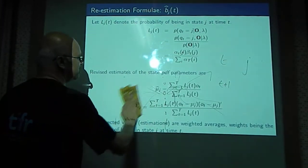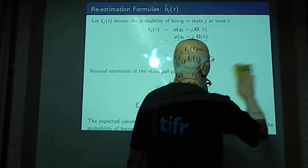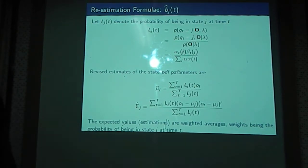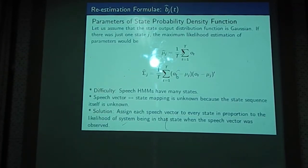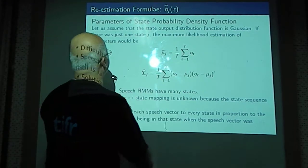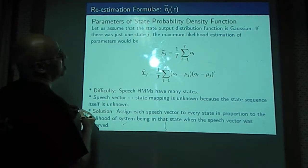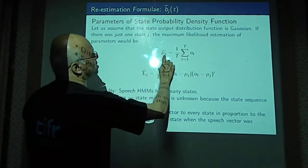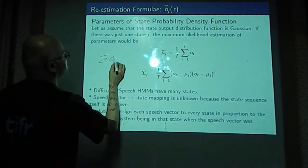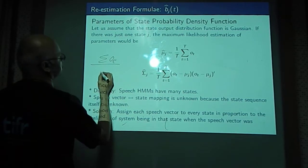Now we are ready to re-estimate the parameters mu and covariance matrix. So the earlier expression for mu, please note this earlier expression was like this. All that we did was, I am copying it here so we can compare it. If we know which observation vectors belong to j, all that we have to do is summation of all those observation vectors and the number of such observation vectors.